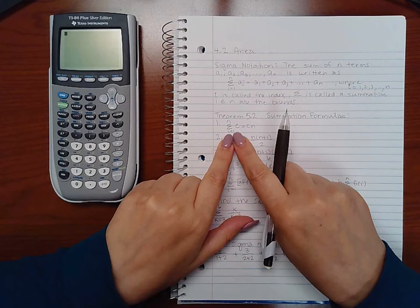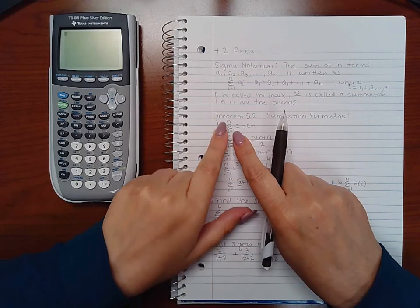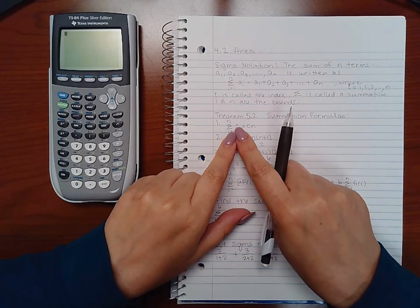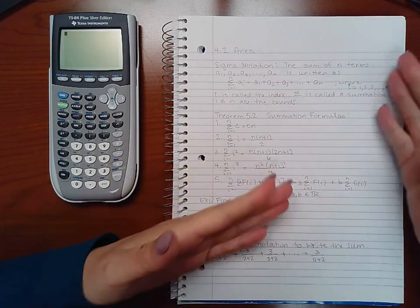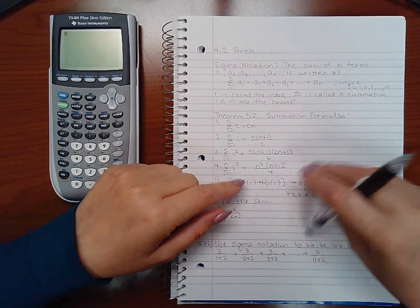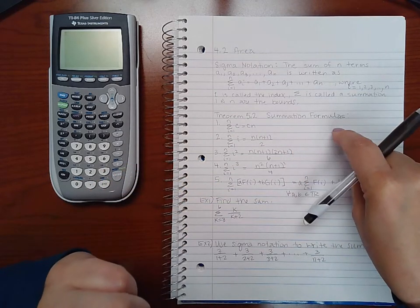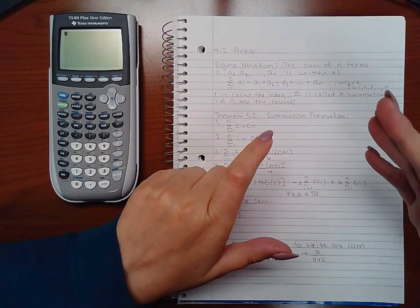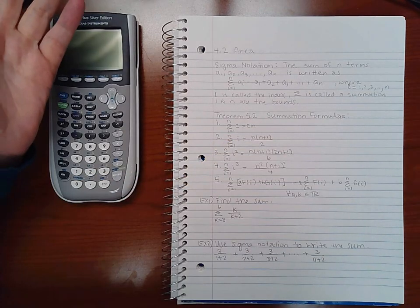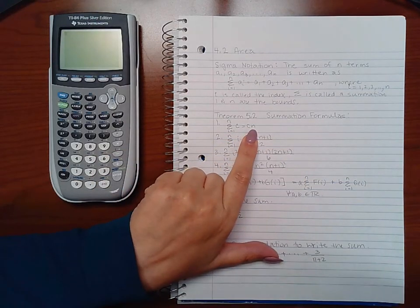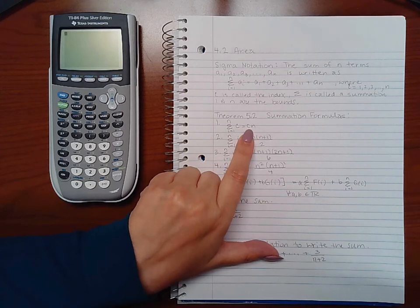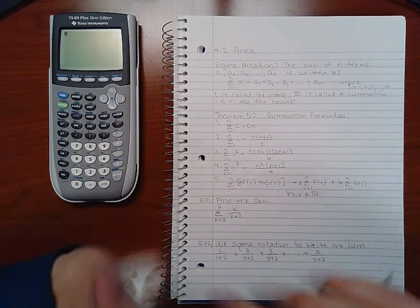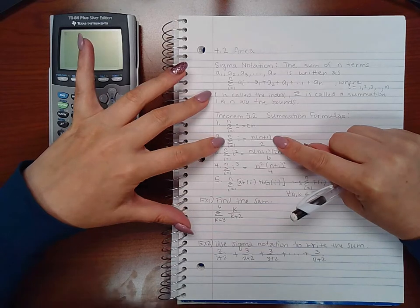So this theorem is a summation formulas theorem. It tells you that if you're taking the summation of a constant from one to n, since there's nowhere to plug in the i value, every single time you try to plug in one you're just going to get c. When you try to plug in two, you're going to get that same constant; when you try to plug in three, you're going to get that same constant. So you're just going to end up with the constant plus the constant plus the constant—how many of them? n number of them. And instead of adding n number of them together, you can just say n times that constant.